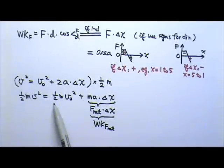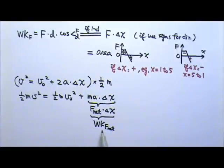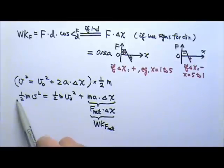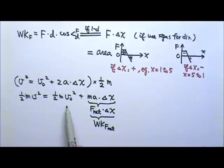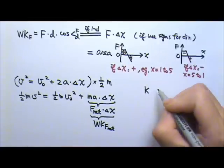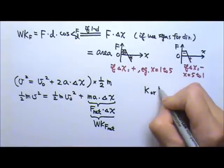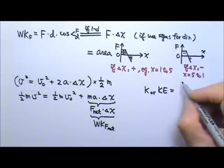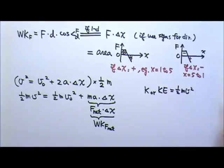So ½mv² equals ½mv₀² plus the work done. Work is energy in joules, and if that term is in joules, then ½mv² and ½mv₀² are also in joules — meaning they represent some form of energy. If a mass is moving, it has this kind of energy, which we call kinetic energy. We use capital K, or KE, and the equation is K = ½mv².